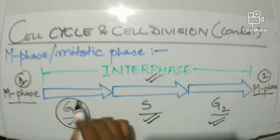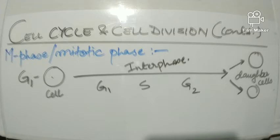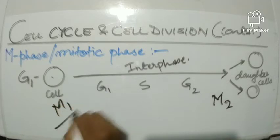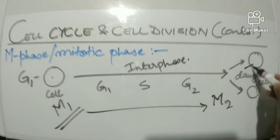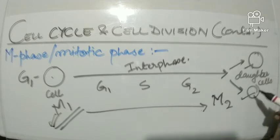Now let us understand what G1 phase is. As you can see on the screen, a cell undergoes interphase and finally gets divided into daughter cells. A new cell is formed as a result of the recently concluding M phase. By the end of M1 phase, the cell is getting divided into two daughter cells.